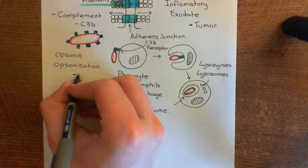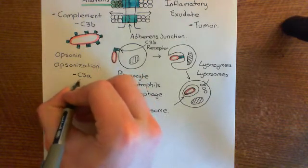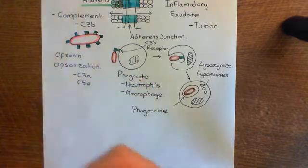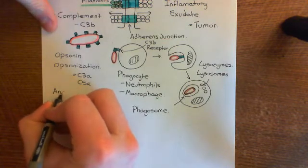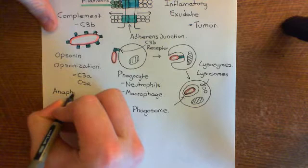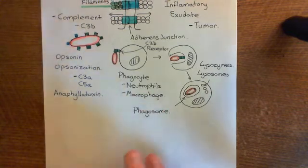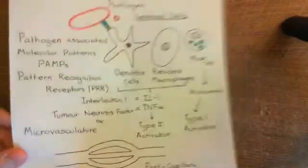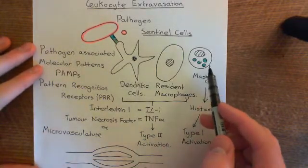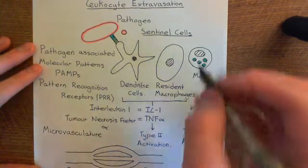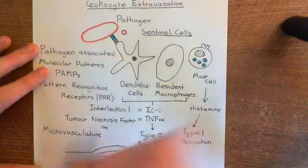Other purposes of the complement cascades are that you also produce C3A and C5A. These are known as the anaphylatoxins and they go back and stimulate mast cell degranulation — so these are a positive feedback loop. The entire inflammatory response, all of Type 1 activation, was caused by mast cells releasing histamine. Now these molecules, C3A and C5A, are going to go back and act on receptors on the surface of mast cells.